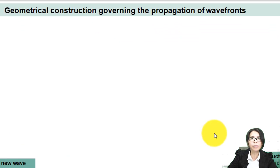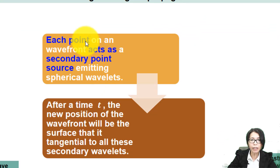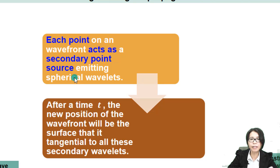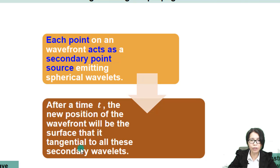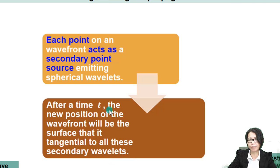According to Huygens' Principle, each point on a wave front can act as a secondary point source that emits a spherical wave front. After a time T, the new position of the wave front will be the surface that is tangential to all these secondary wave fronts. This is how we create the new wave front after a time T.